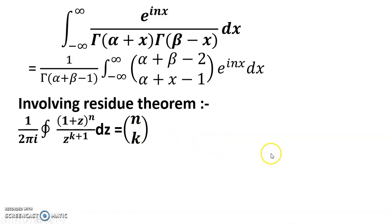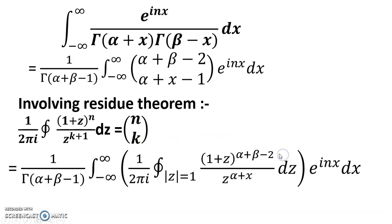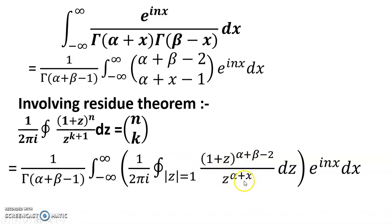Using this formula with mod z equals 1 on the unit circle, we get 1 over gamma(alpha plus beta minus 1) times the integral, where z to the power (alpha plus x) times (1 plus z)^(alpha plus beta minus 2) appears. The circle is the unit circle.